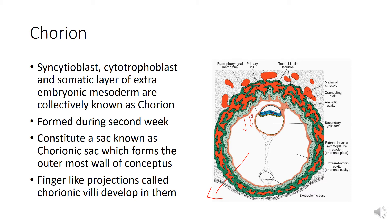Very soon, finger-like processes called chorionic villi develop on the chorionic sac. The earliest chorionic villi appear as clumps of cytotrophoblasts in the outer layer of the syncytiotrophoblasts and are known as primary chorionic villi. The primary villus has an outer covering of syncytiotrophoblasts with a finger-like projection of cytotrophoblasts forming its inner core.